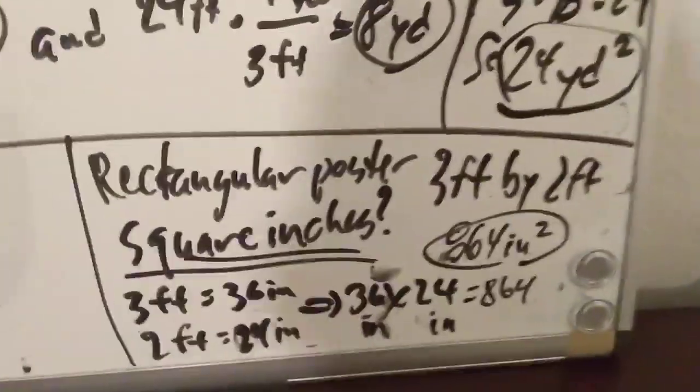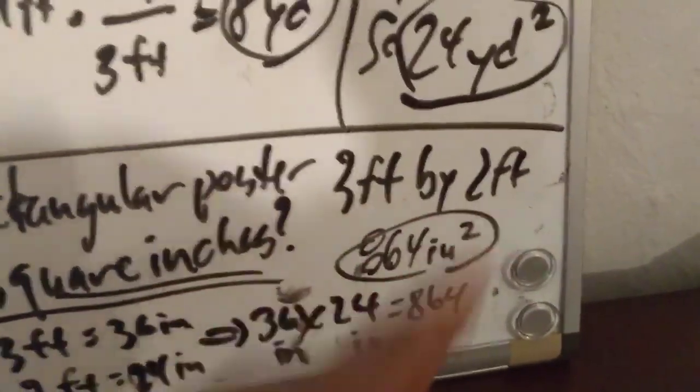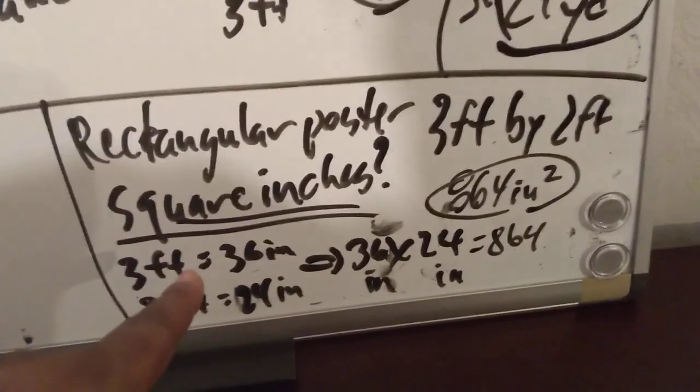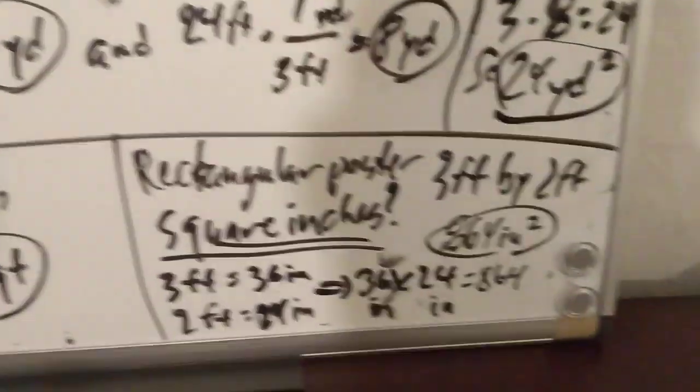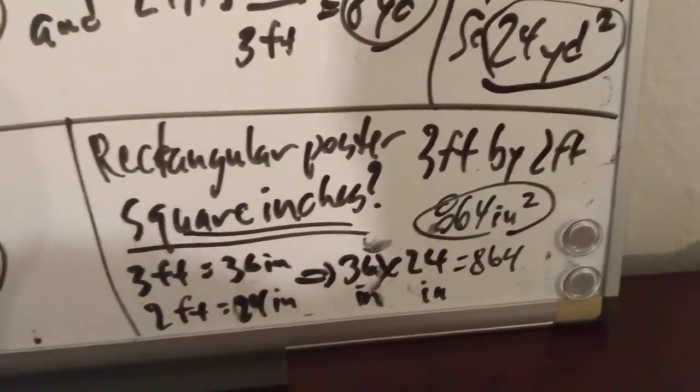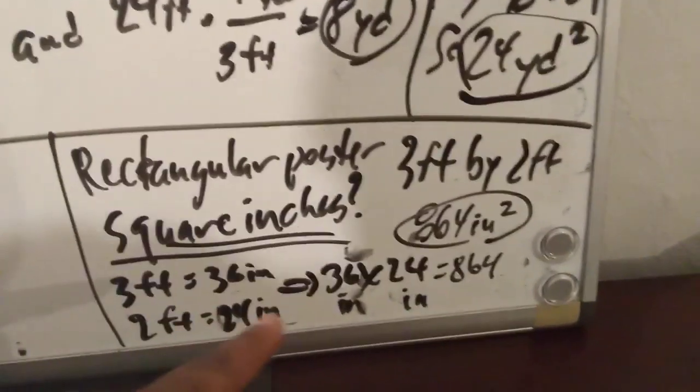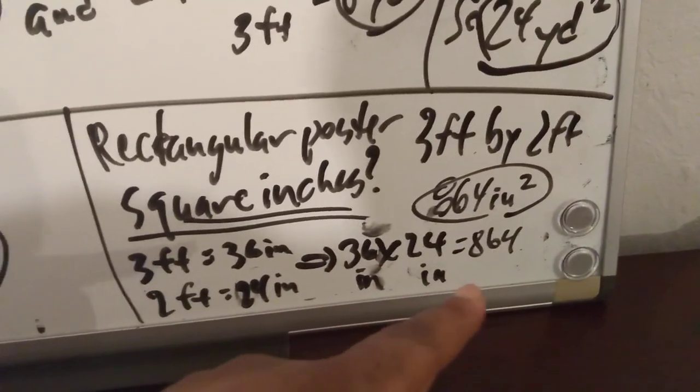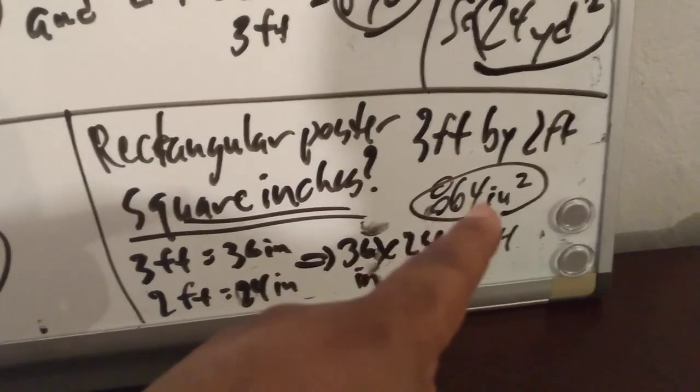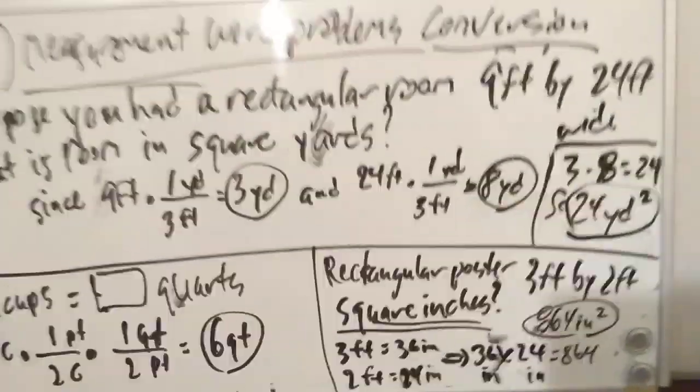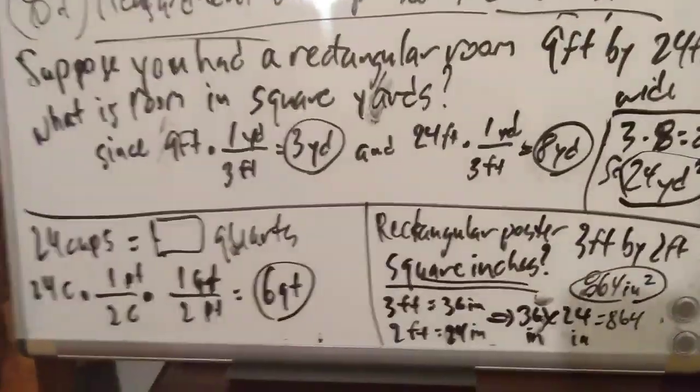What about a rectangular poster that's 3 feet by 2 feet? We want to know what it is in square inches. Well, 3 feet is 36 inches, and 2 feet is 24 inches. So we're really looking at 36 inches by 24 inches, or 36 times 24, which is 864. But since it's inches times inches, that'd be inches squared, so it's 864 inches squared.